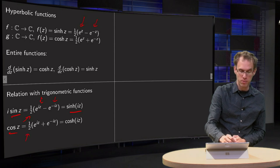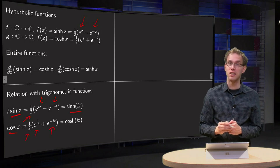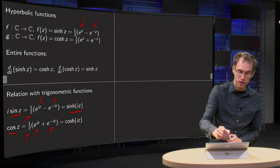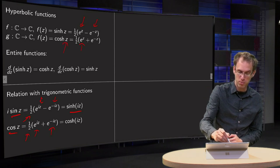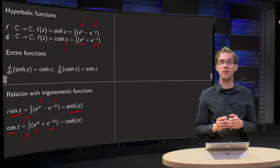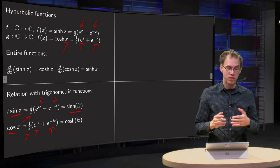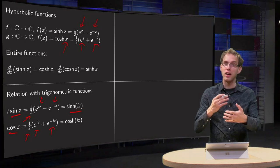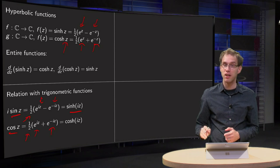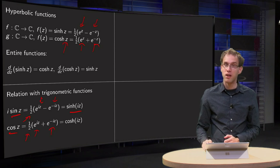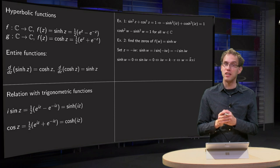Similarly for the cosine of z: that's one half e to the power of iz plus e to the power of minus iz, which is the same as the cosine hyperbolic if you plug in i times z — then you get one half e to the power of i times z plus e to the power of minus iz. So you see cosine and cosine hyperbolic, and sine and sine hyperbolic, are closely related.